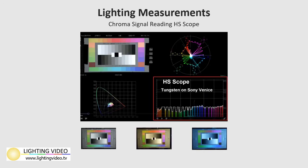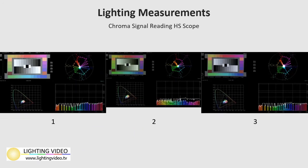The camera converts light into a readable electronic signal. That's the reason for my methodology — to use the camera's chroma signal as my guide to evaluate and calibrate lighting for the camera. I've used this method for decades with a wide range of light sources on a wide range of cameras. I co-created the HS Scope to simplify the process by displaying the chroma signal in a horizontal spectral format, along with the vector points displayed along the bottom of the scope. In my calibration method, I read the chroma output from the camera of a reference light source as it lights a DSC chart.